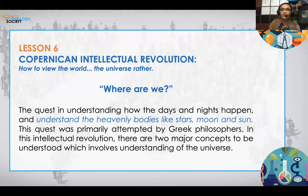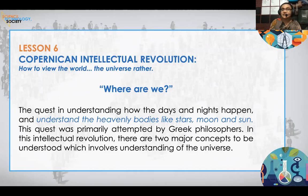The Copernican Intellectual Revolution is an intellectual revolution that changed how we view the universe. It answered the question: where are we — where is the Earth in this vast universe? The quest to understand how days and nights happen and to understand heavenly bodies like stars, the moon, and the sun was primarily attempted by Greek philosophers.